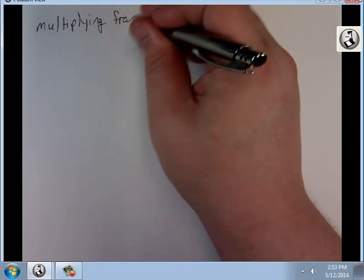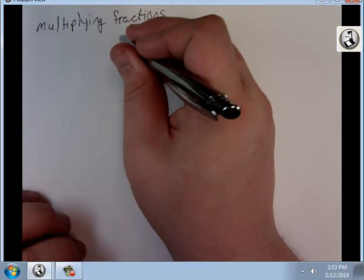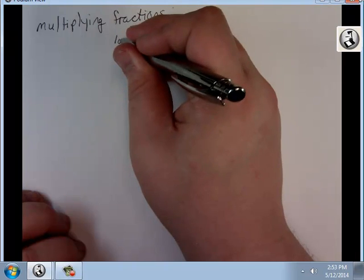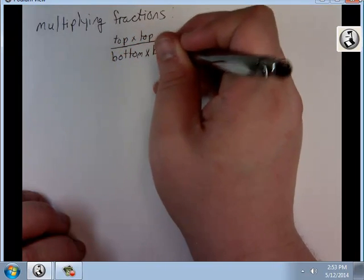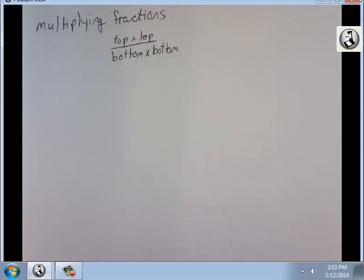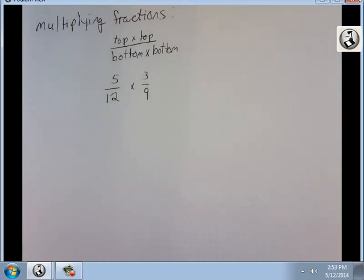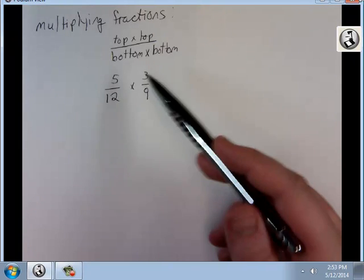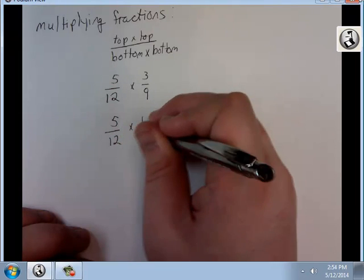Multiplying fractions. You do not need common denominators for anything beyond addition and subtraction. Multiplying fractions actually is pretty easy. It's top times top over bottom times bottom. It is that simple. Let's say we have 5 over 12 times 3 over 9. First of all, this can reduce. We can reduce this down to 1 third. 5 over 12 times 1 over 3.